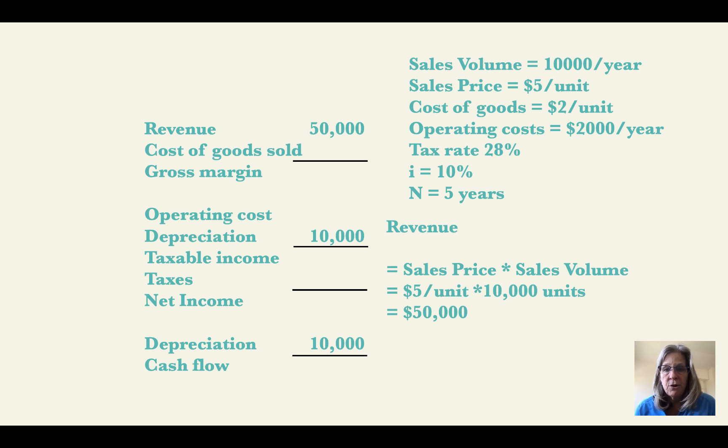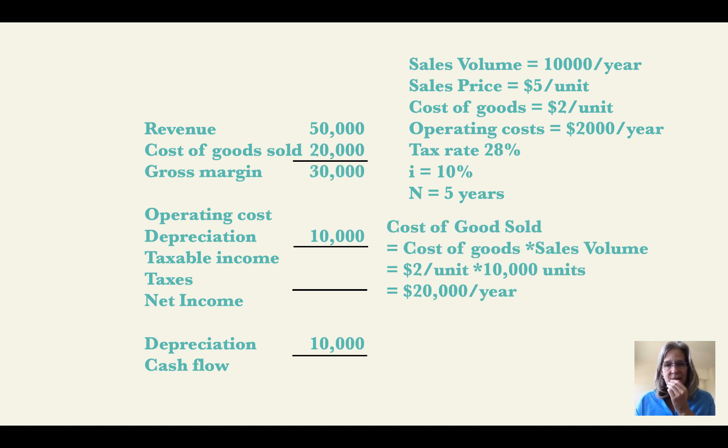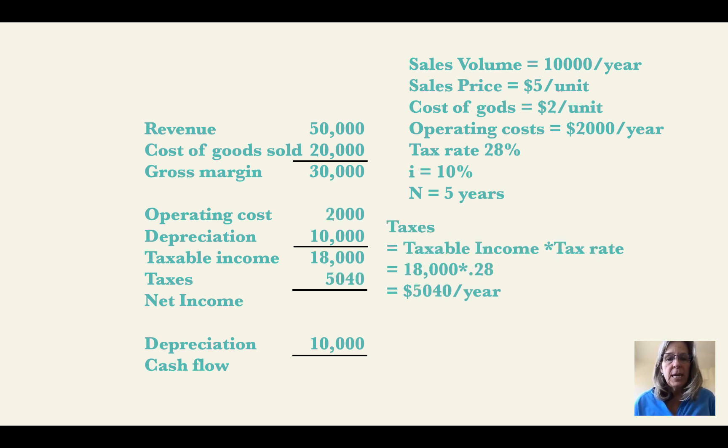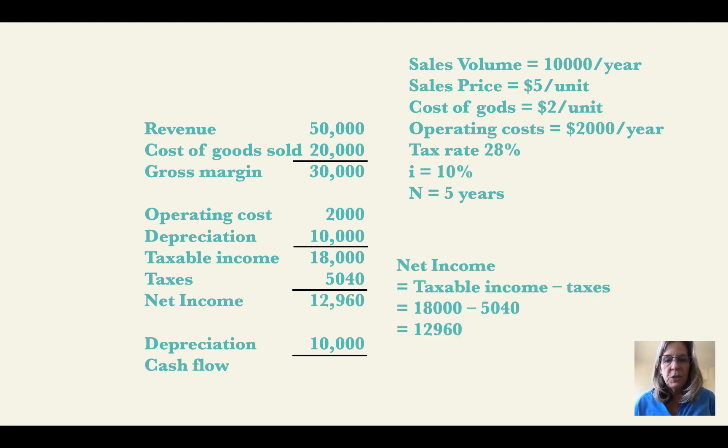And then I put revenue. So sales is $5 per unit times 10,000 units, which is $50,000. Cost of goods sold is $2 a unit times 10,000 units, which is 20,000. So then I can get gross margin at 30,000. I put in operating expense and then I do a calculation for taxes. So my taxable income is $18,000 when I take $30,000 minus $2,000 minus $10,000, which is $18,000 times 28%, which is $5,040. Then I get my net income from that, which is going to be $12,960. Then I add back depreciation because it is a non-cash item and I get cash flow of $22,960.